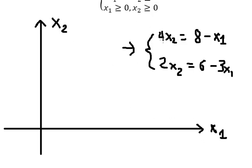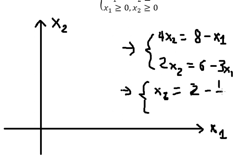Next, we divide both sides by number four. So for this one we have number two, and this one we have negative one over four. Then we divide by number two, and we have three minus three over two.